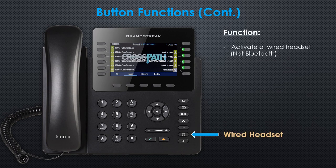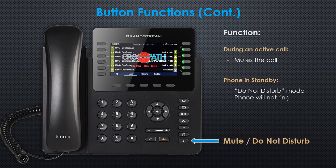The wired headset button will activate a connected wired headset. This button is not used to activate a Bluetooth headset. The mute and do not disturb button has two functions. During an active call, this button will mute the call, turning the button red while muted. If the phone is in standby mode, this button will place your phone in do not disturb mode. Your phone will not ring in do not disturb mode. Calls will be directed to your voicemail box.